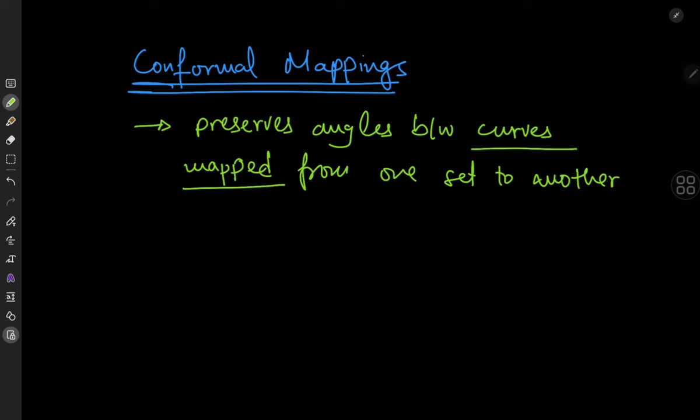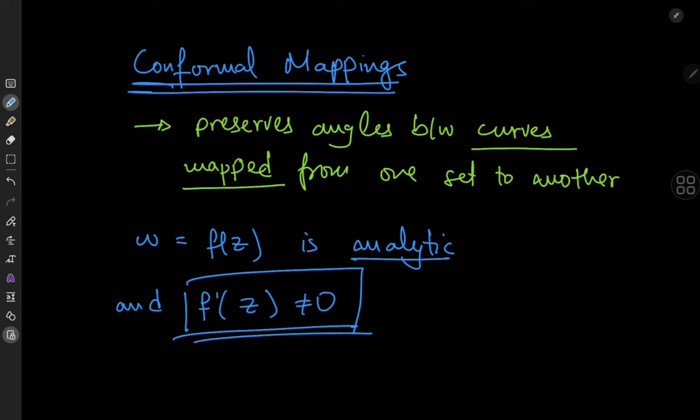Now what exactly makes a function a conformal mapping? For that analysis we're going to be considering w equal to f of z being an analytic function, and we're going to take the function to have a non-vanishing derivative.